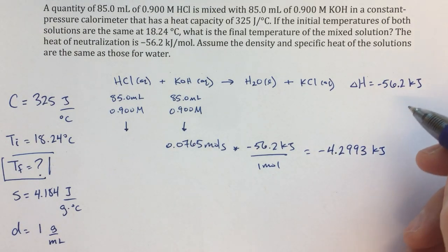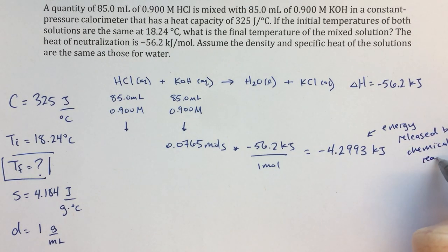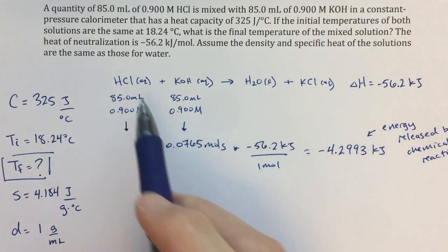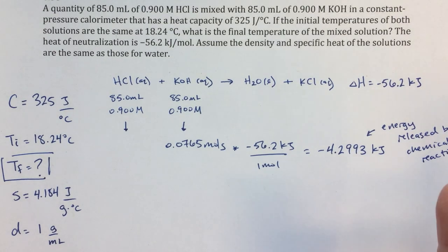So what this represents, this represents the amount of energy released. So let's sort of annotate that. Energy released by the chemical reaction, or we might call that the system. So by the chemical reaction, when I mix these HCl and KOH solutions together, that amount of energy is going to be released. Minus 4.2993 kilojoules.